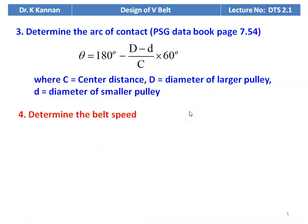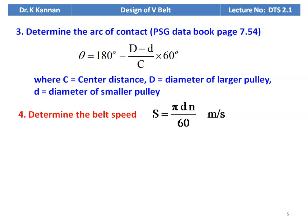Then determine the belt speed. Belt speed s = πdn/60, where d is the diameter of the smaller pulley and n is the speed of the smaller pulley. Calculate the belt speed in meters per second.